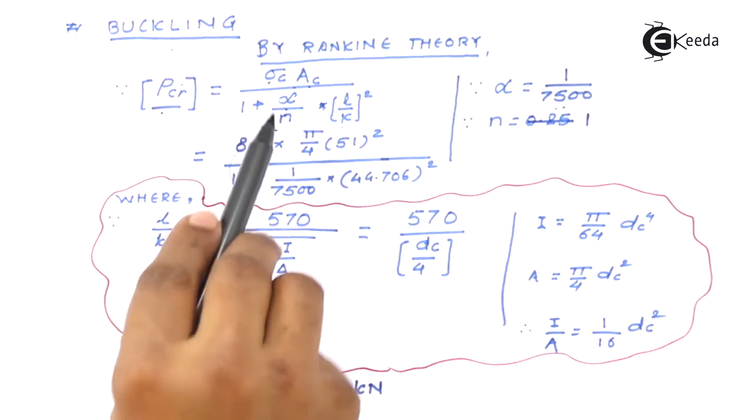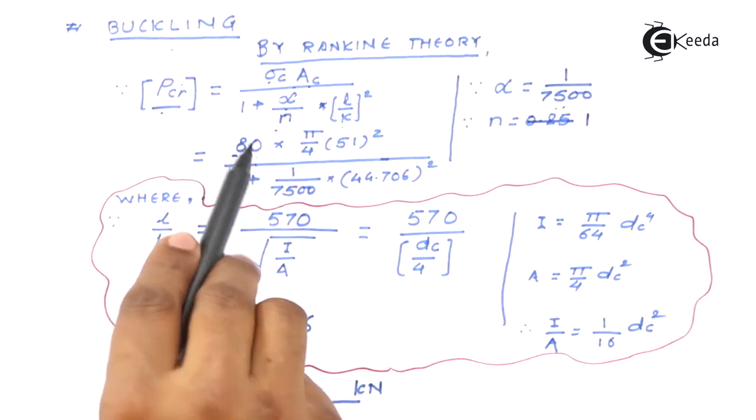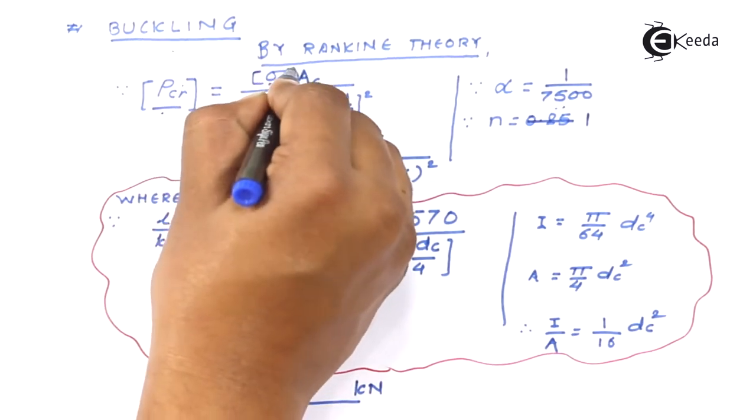The critical or the lower critical or crippling load to be somewhere around 129 kilo newton.